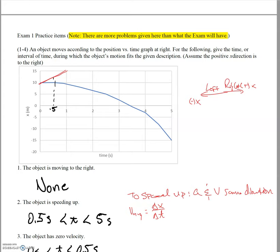The slope at any given point on the curve gives us the instantaneous velocity. The tangent lines drawn to those points tell you what the slope is at each point, and each of those tangent lines represents the velocity at that point. As we move along the curve, those slopes are getting bigger and bigger.